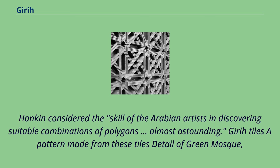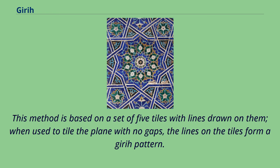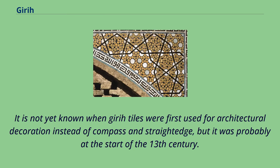Hanbury Hankin considered the skill of Arabian artists in discovering suitable combinations of polygons almost astounding. By the 15th century, some girih patterns were no longer periodic and may have been constructed using girih tiles — a method based on a set of 5 tiles with lines drawn on them. When used to tile the plane with no gaps, the lines on the tiles form a girih pattern. It is not yet known when girih tiles were first used for architectural decoration instead of compass and straightedge, but it was probably at the start of the 13th century.